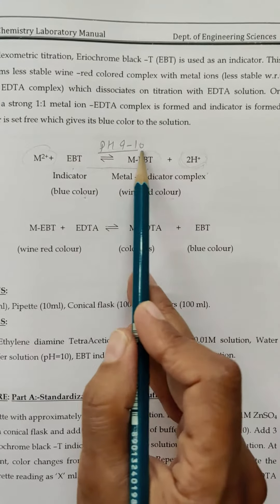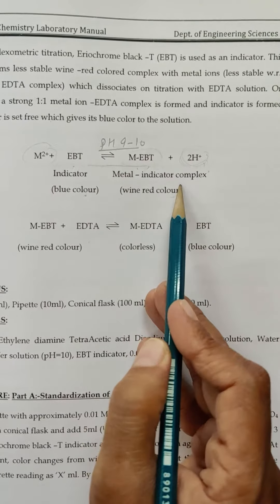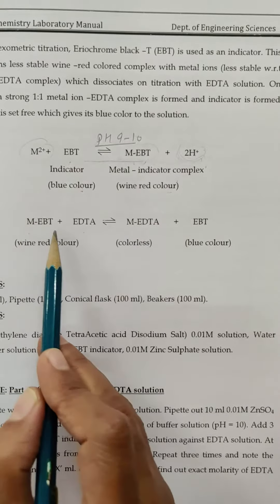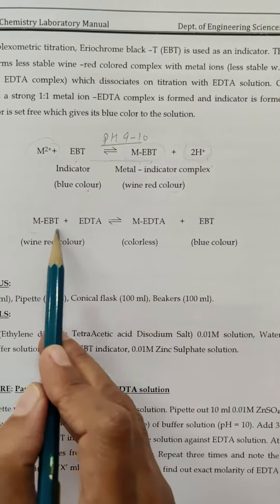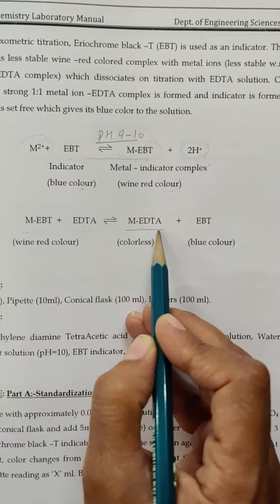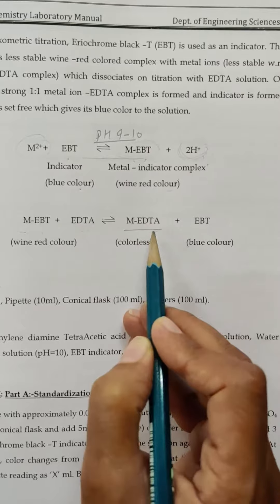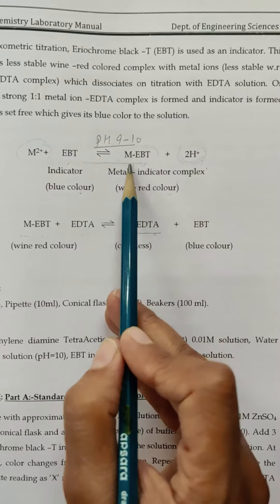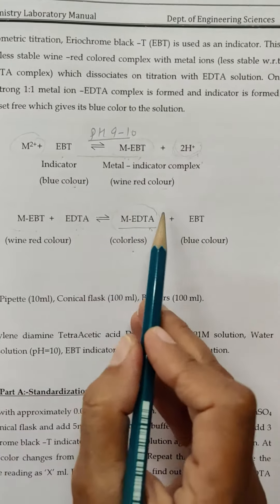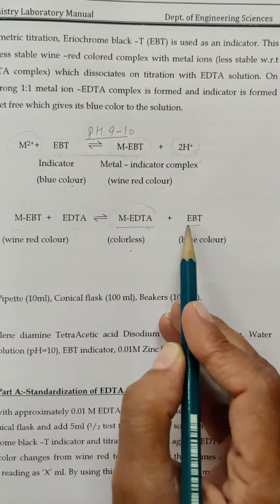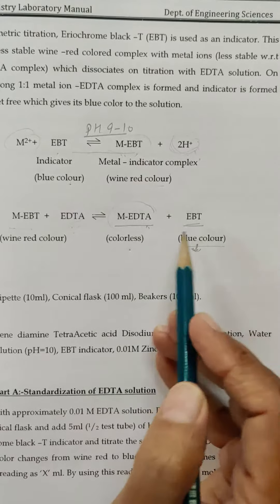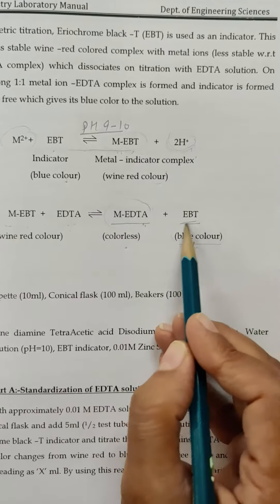The metal-EBT complex formed is a less stable complex. When we start adding EDTA, it comes in contact with the metal-EBT complex and immediately a metal-EDTA complex is formed, which is very stable compared to the metal-EBT complex. The colour of the metal-EDTA complex is colourless, so EBT gets free and shows its original colour, which is blue. So at the end point, you are going to get blue colour.